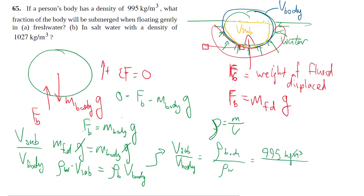Using 1000 again as my density for water, that gives us 995 kg/m³ divided by 1000 kg/m³, so it gets 99.5% submerged.